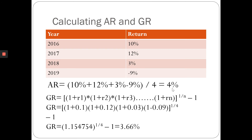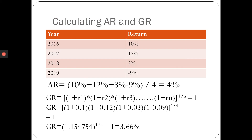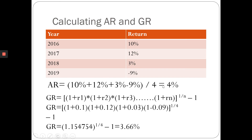So the geometric return is 3.66% and the arithmetic return is 4%. If someone asks what the return will be next year, in a typical year the arithmetic return of 4% is the estimate to use. But if someone asks how much you actually earned annually from 2016 to 2019, the answer is the compound annual return of 3.66%.